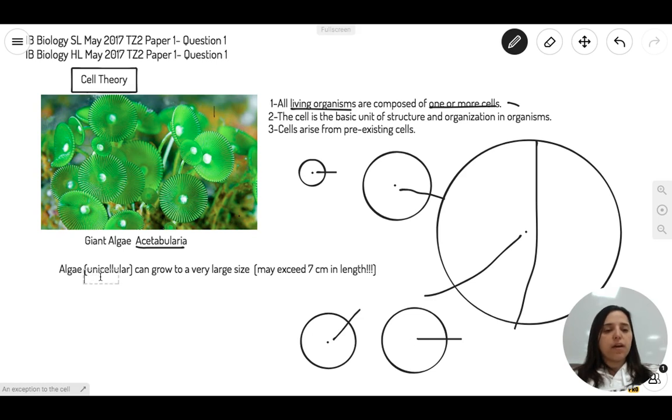The acetabularia is actually just made of one cell. And here's the interesting part of it—it can become very big, extremely large, up to 7 centimeters in length.